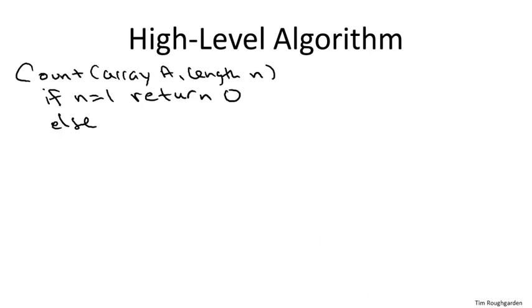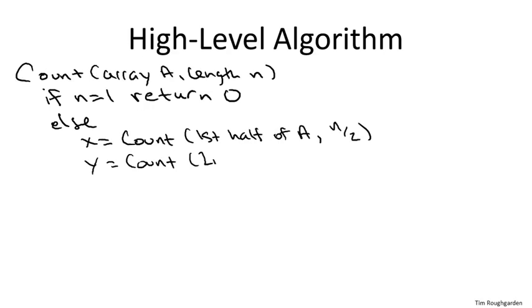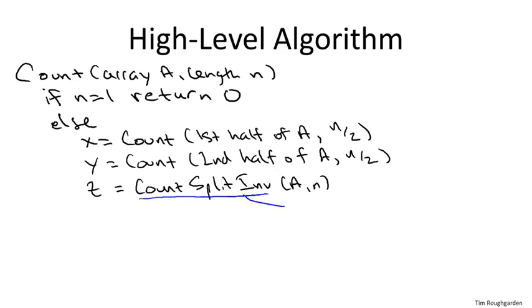For any bigger array, we're going to divide and conquer, so we'll count the left inversions with a recursive call, the right inversions with a recursive call, and then we'll have some currently unimplemented subroutine that counts the split inversions. Since every inversion is either left, or right, or split, and can't be any more than one of those three, then we, having done these three things, we can simply return their sum.